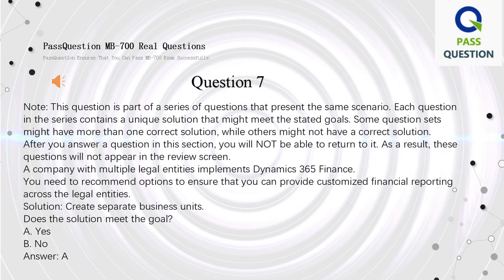Question 7 — Note: This question is part of a series that presents the same scenario. Each question contains a unique solution that might meet the stated goals. Some question sets might have more than one correct solution while others might not have a correct solution. After you answer a question in this section, you will not be able to return to it. A company with multiple legal entities implements Dynamics 365 Finance. You need to recommend options to ensure customized financial reporting across the legal entities. Solution: Create separate business units. Does the solution meet the goal? A: Yes. B: No. Answer: A.